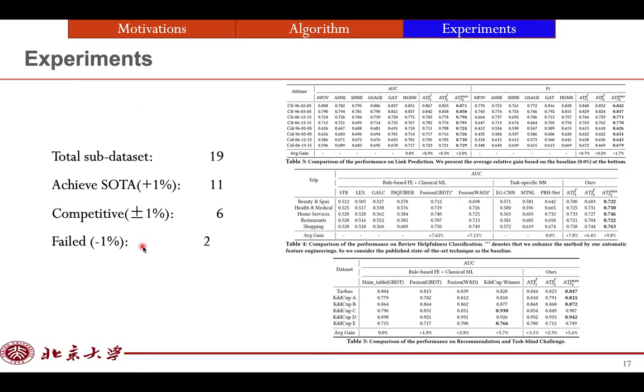For all 19 sub-datasets, our method achieves the state-of-the-art results on 11 sub-datasets, which means that we surpass other solutions by more than one percentage improvement. And our method is competitive with the current SOTA solution on six sub-datasets, which the relative improvement is within plus or minus one percentage. And we fail on two sub-datasets with one percentage behind.